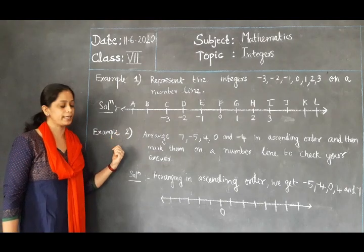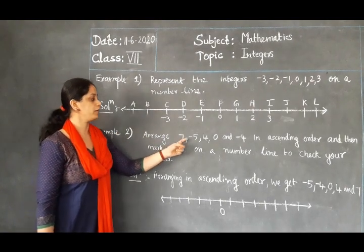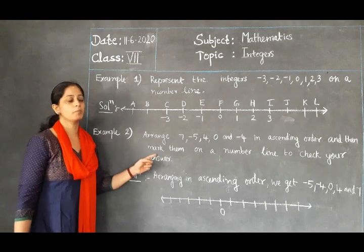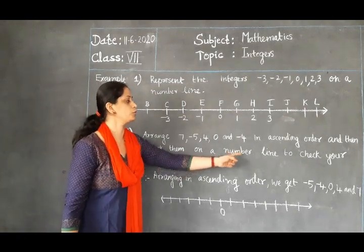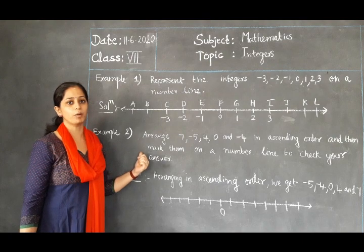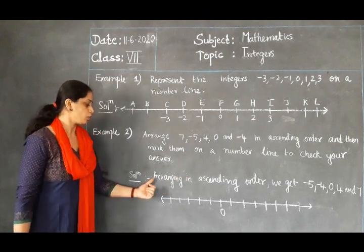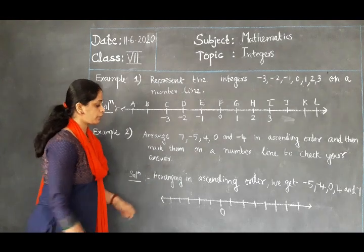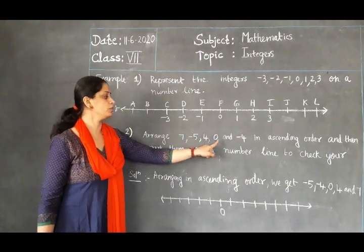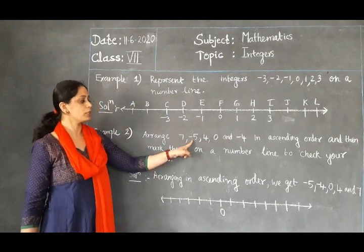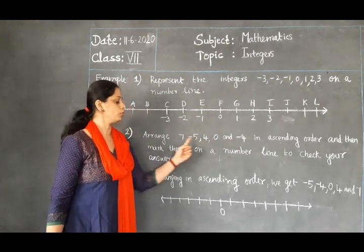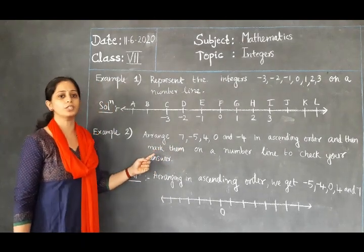Now let us take the second example. They have given numbers 7, minus 5, 4, 0, and minus 4 and asked to arrange them in ascending order, then mark them on a number line to check the answer. First, arrange in ascending order — that means from the smallest number to the biggest. The numbers given are 7, minus 5, 4, 0, and minus 4. Negative numbers: minus 5 is the smallest, then minus 4, then 0, then 4, then 7. That is the ascending order.